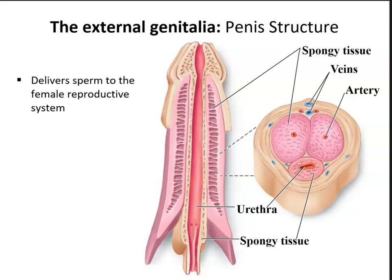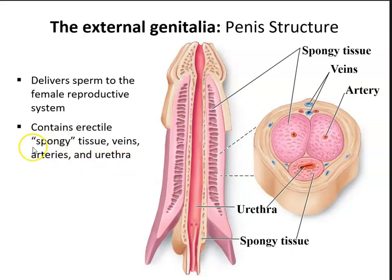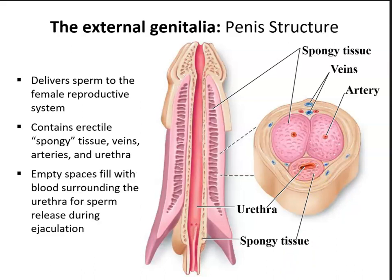We have the penis, which delivers sperm to the female reproductive system. It's made up of cavernous or spongy erectile tissue, as well as veins, arteries, and the urethra. The two cavernous bodies on the dorsal aspect of the penis are the corpora cavernosa. The spongy cavernous body is the corpus spongiosum, which contains the urethra — the passageway for sperm. These cavernous bodies fill up with blood to allow for an erection.